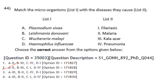Match microorganism with disease: Plasmodium vivax — malaria (A2); Leishmania donovani — kala-azar (B3); Wuchereria malayi — filariasis (C1); Haemophilus influenzae — pneumonia (D4). Answer is option 2.